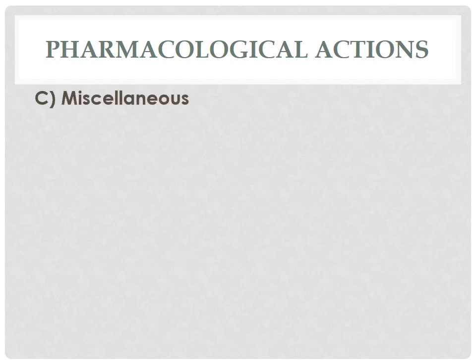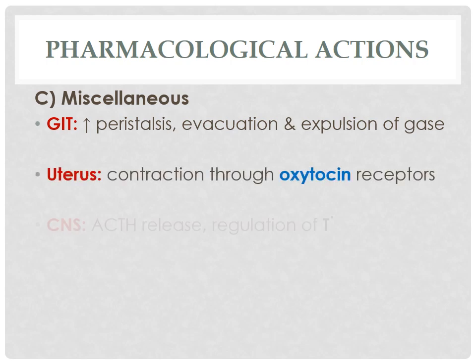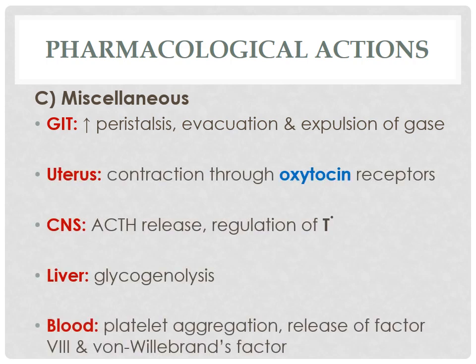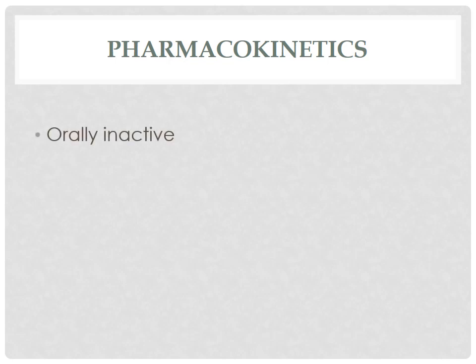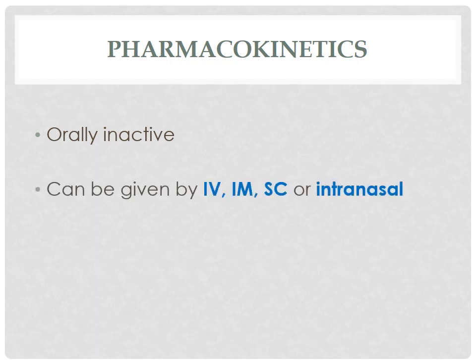The miscellaneous effects of ADH include actions on the GIT, uterus, CNS, liver, and blood. For example, ADH contracts the uterus at high concentration through oxytocin receptors, and vice versa, oxytocin may also give ADH-like effects at high concentration. In important pharmacokinetic features, ADH itself is inactive by the oral route as it is destroyed by trypsin, but it can be administered by intravenous, intramuscular, subcutaneous, or intranasal route. The plasma half-life of ADH is only 25 minutes.